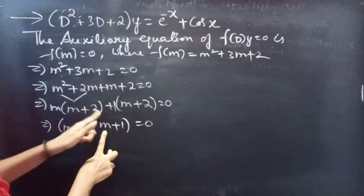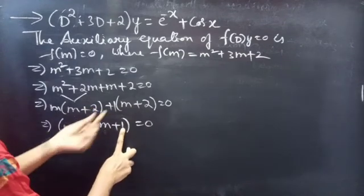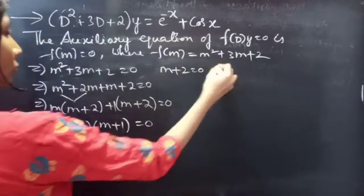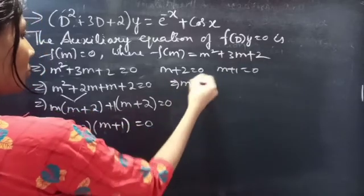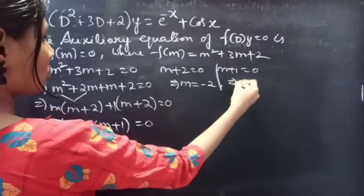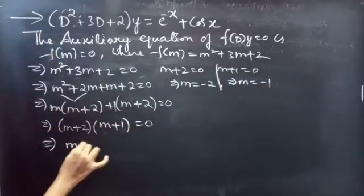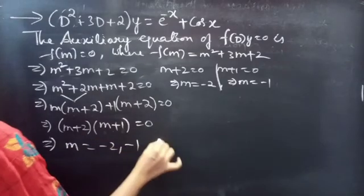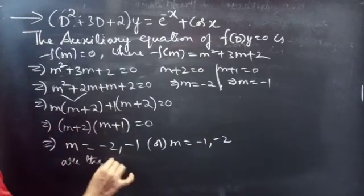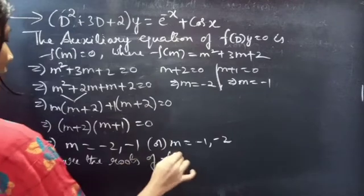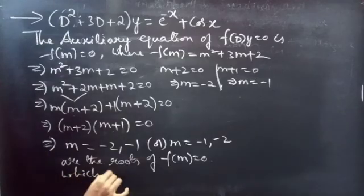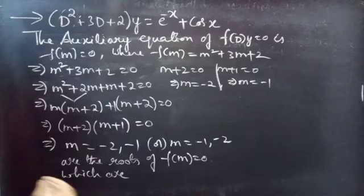We can verify: (m + 2)(m + 1) = m(m + 2) + 1(m + 2), which is correct. Equating each factor to 0: from m + 2 = 0 we get m = −2, and from m + 1 = 0 we get m = −1. So the roots are m = −1 and m = −2, which are real and distinct roots.